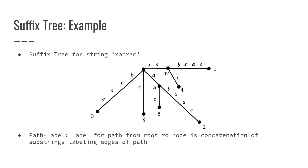From the root to leaf 6, we see the path label C, which corresponds to starting at index 6 and going to the end — we see the character C. Similarly, starting at the root and going to leaf 1, we see the path label XA, and then continuing from that internal node W, we see BXAC. So from root to W to leaf 1, the total path label is XABXAC, which coincides with beginning at index 1 and continuing to the end of the string.